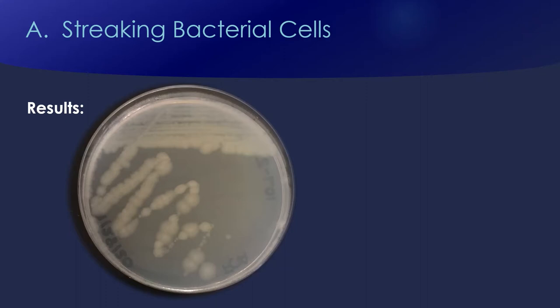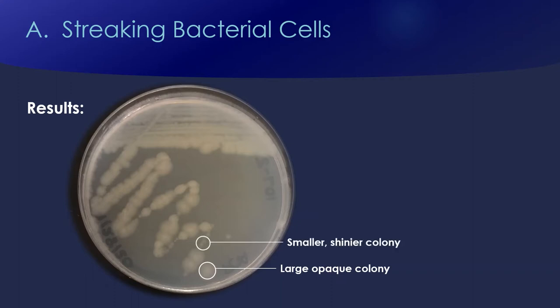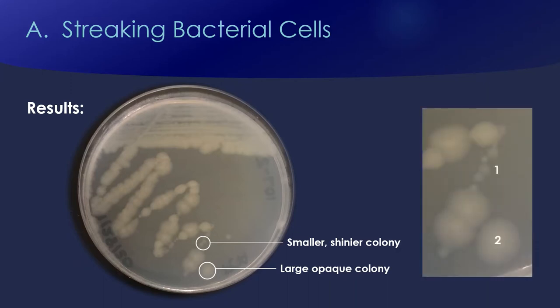Here are the results from our streak plate. This has been incubated for about a day and a half. This was a mixed culture that actually had three different bacterial species in it. I can only see two on this plate: these big kind of opaque colonies, and these smaller, well-defined, shinier colonies. In this lab we're going to try to identify what those species are by looking at their characteristics under the microscope and through different biochemical characteristics.